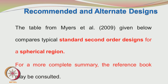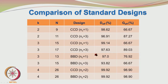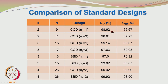There is a table from Myers et al. 2009 comparing typical standard second order designs for a spherical region. Considering the central composite and Box-Behnken designs, with K referring to the number of factors and NC to the number of center runs: for K equals 2 with NC equals 1, the D-efficiency is 98.62% but G-efficiency is only 66.67%. Increasing center points slightly reduces D-efficiency from 98.6% to 96.9%, but dramatically improves G-efficiency to 87.27%. For K equals 3 with 15 runs in the CCD with one center point, D-efficiency is quite high but G-efficiency is pretty low.